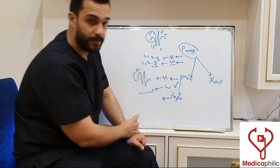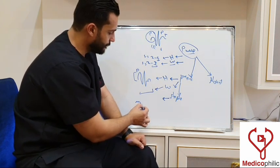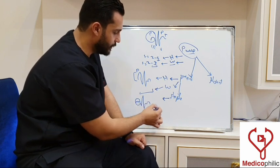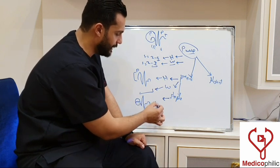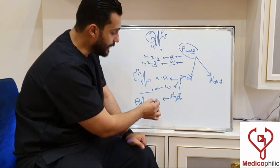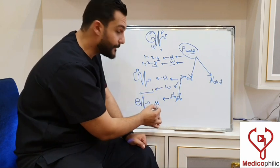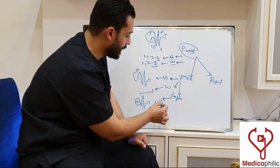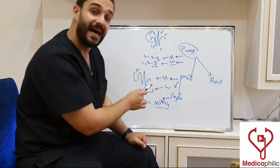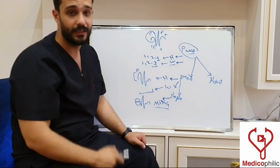Regarding the shape of the P wave: if the shape is bifid — roughly resembling the letter M in English — it is called P mitrale. P mitrale is due to mitral valve stenosis, which causes left atrial enlargement.